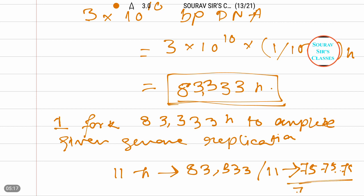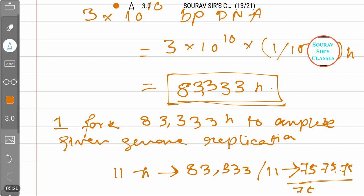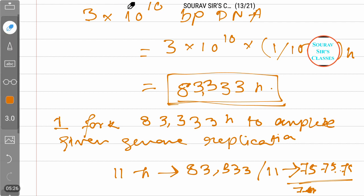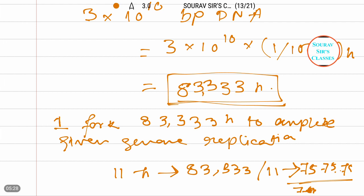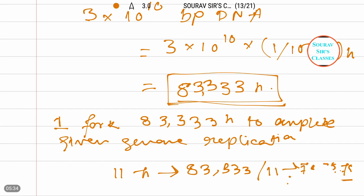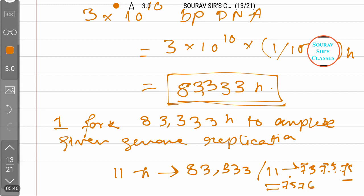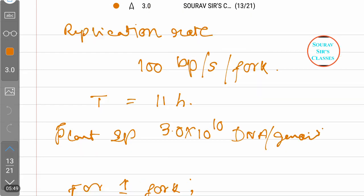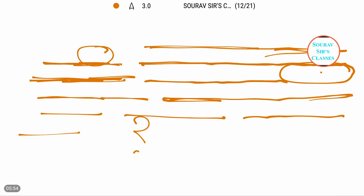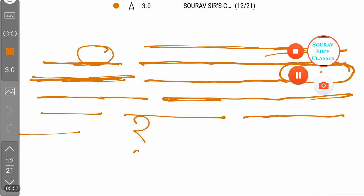So the answer is approximately 7575 to 7576 bidirectional forks per genome. That will be the final answer. Thank you.